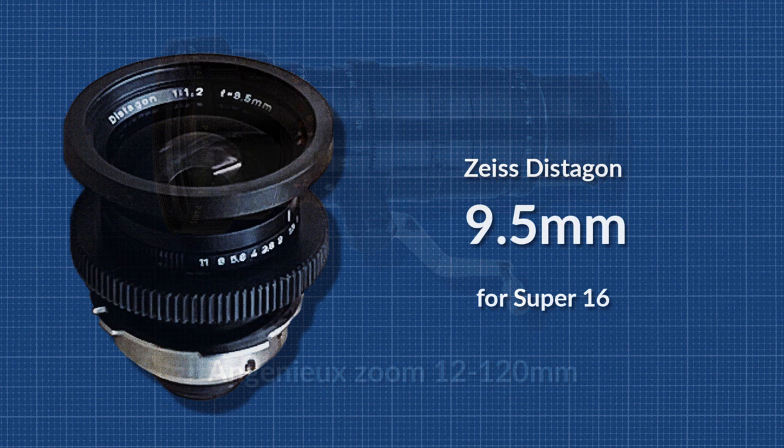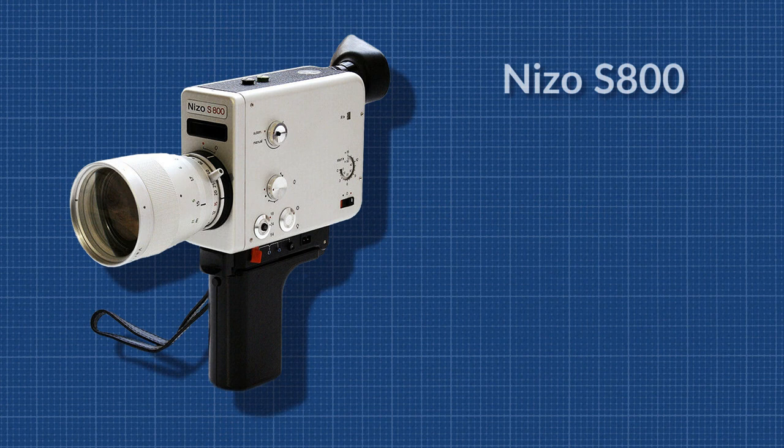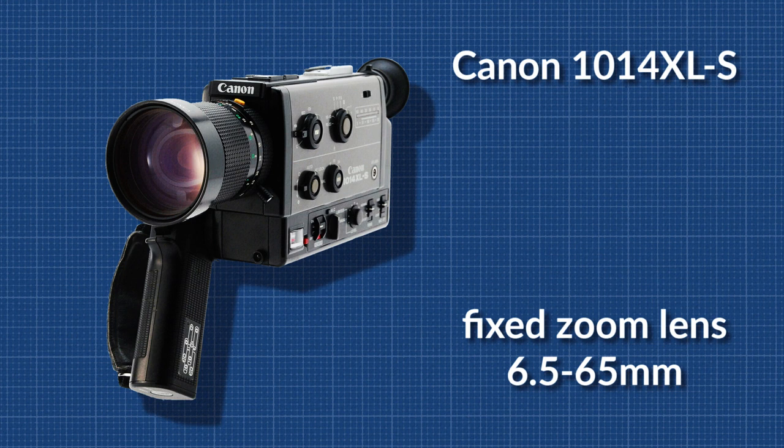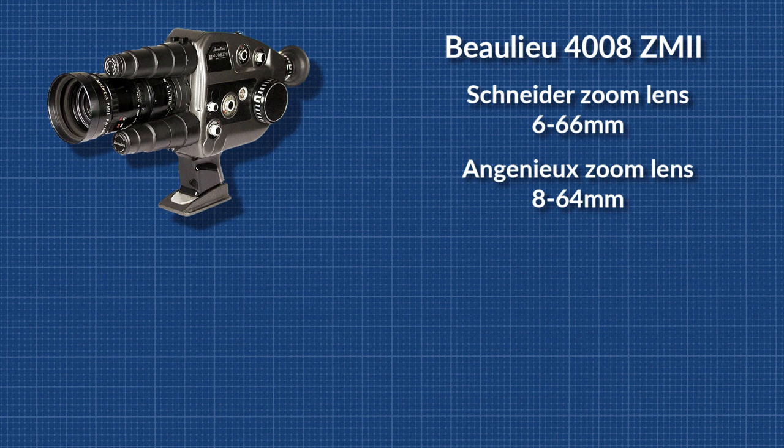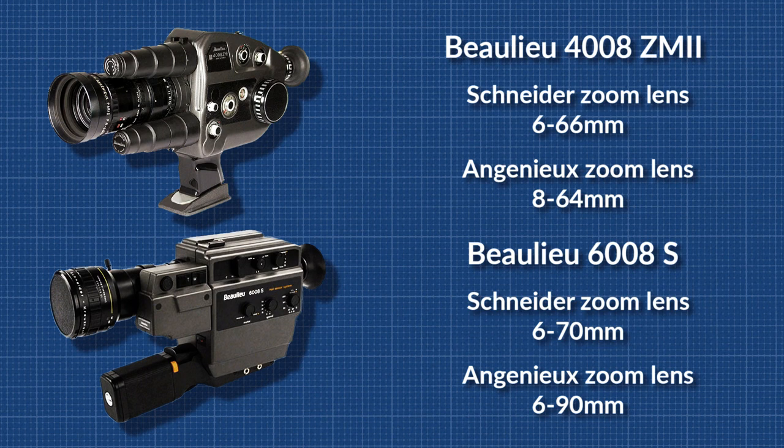For Super 8 film, remember that 15mm is the normal focal length. You have these excellent cameras. The Nizo S800 with a fixed zoom lens 7-80mm, which is very good. The Canon 1014XLS with a fixed zoom lens 6.5-65mm, which goes wider. The Beaulieu 4008ZM2 with the interchangeable Schneider 6-66mm or the Angenieux 8-64mm. The Beaulieu 6008S with the interchangeable Schneider 6-70mm or the Angenieux 6-90mm, which is very impressive.